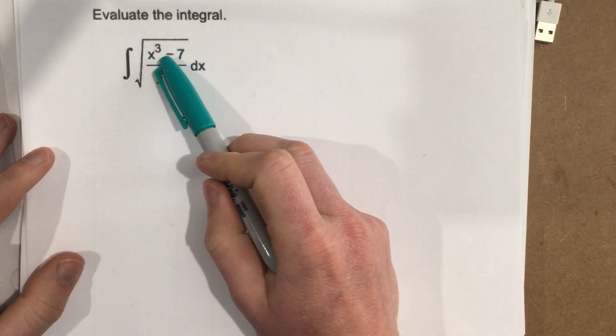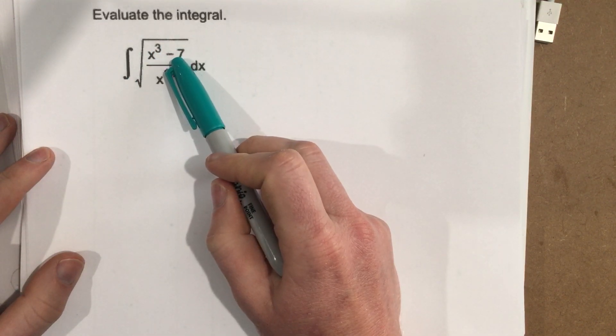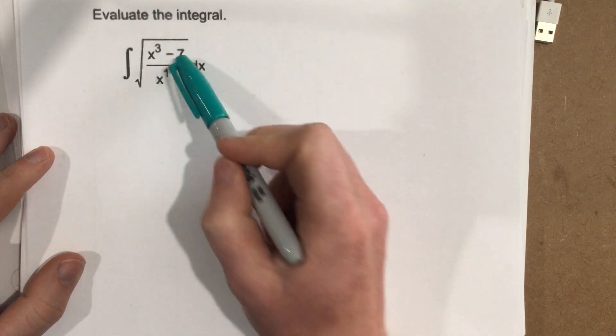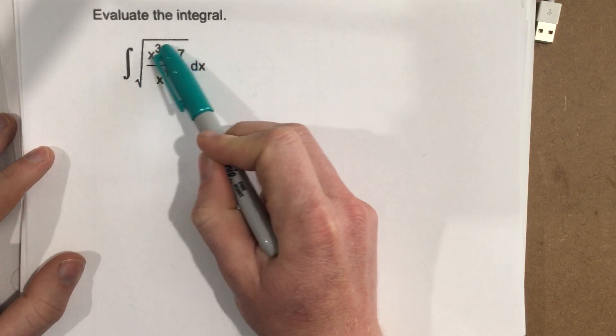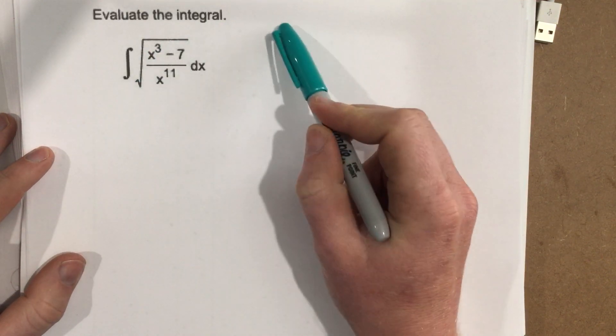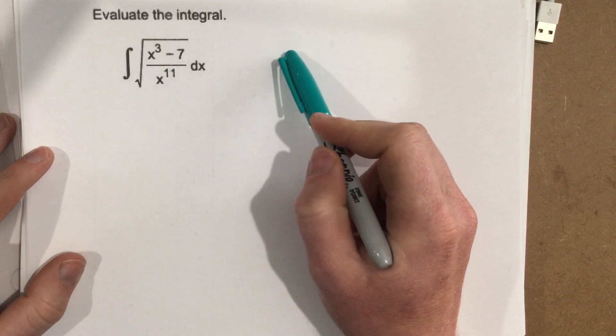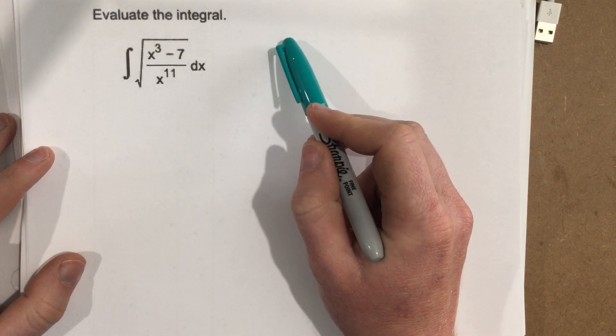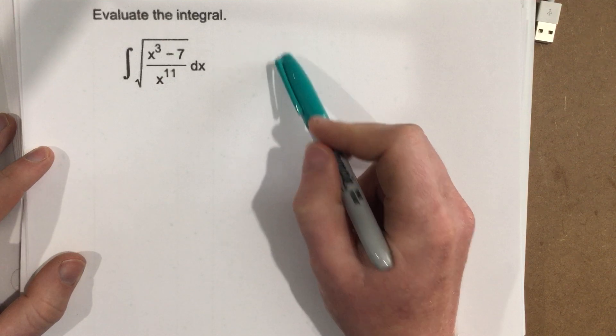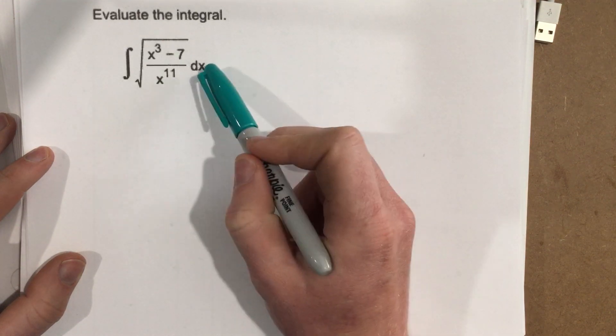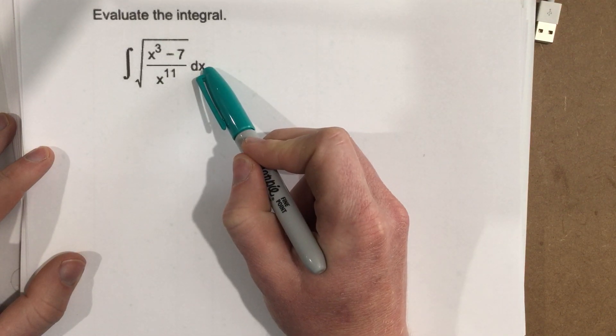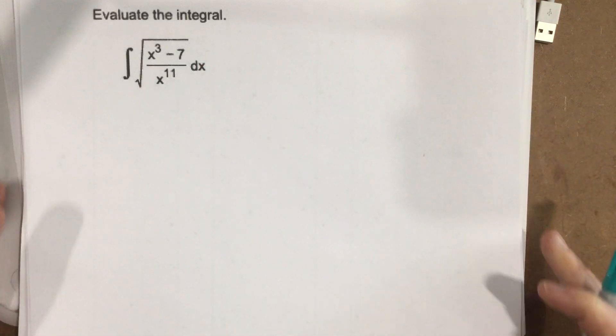And vice versa, if I make u equal to x cubed minus 7, that's not going to get us anywhere. If I make u equal to the whole thing in the middle, now when I do the derivative, I have to do the quotient rule. And that's going to leave me just with some more x variables. So when we substitute it in, it's not going to cancel anything.